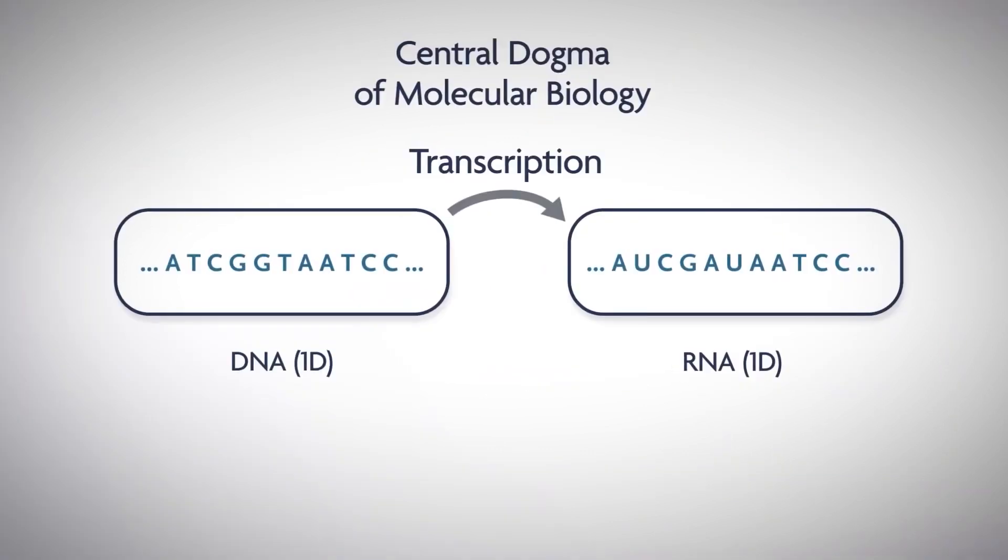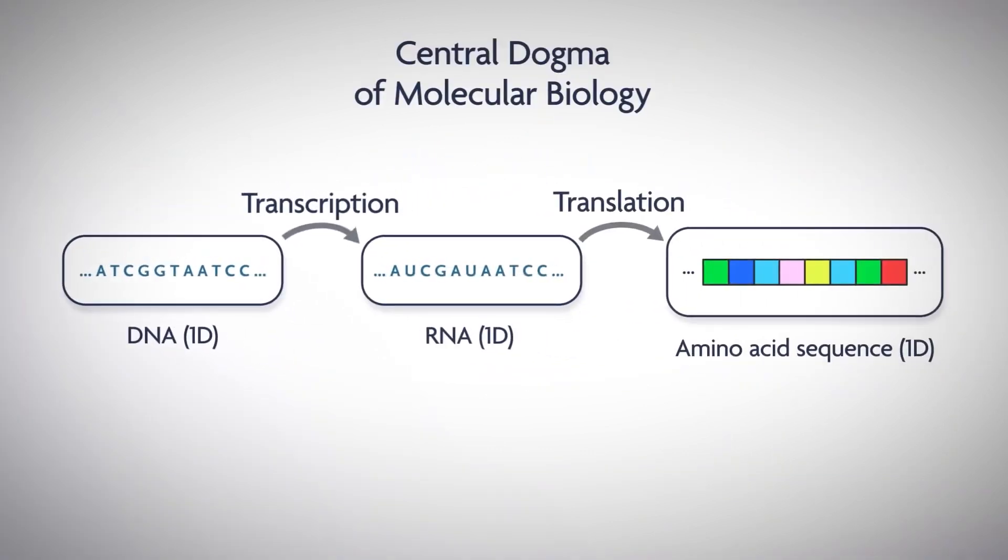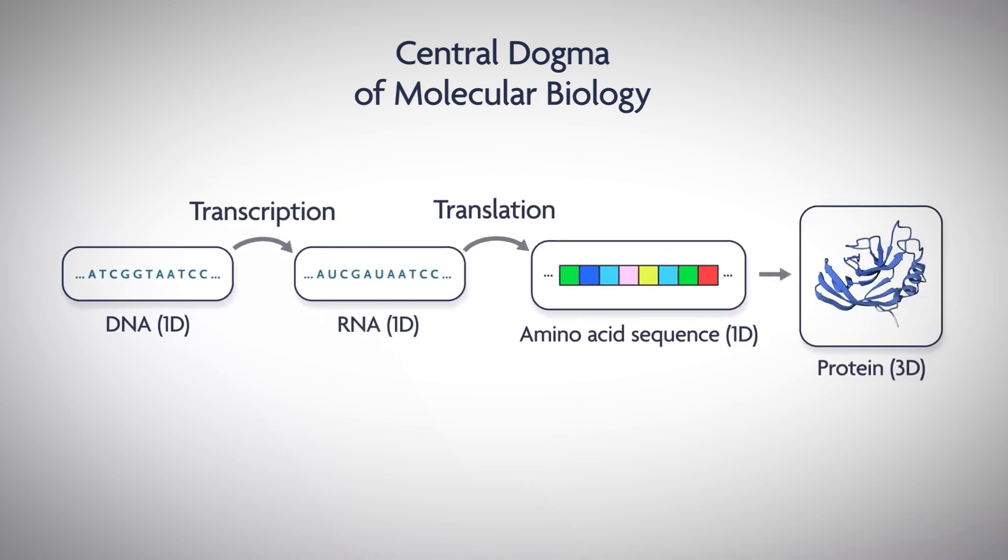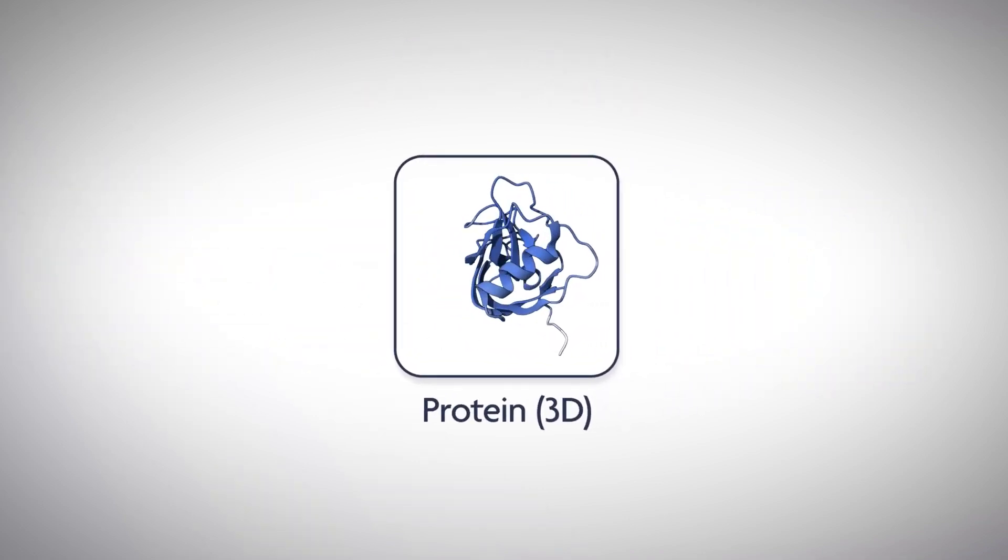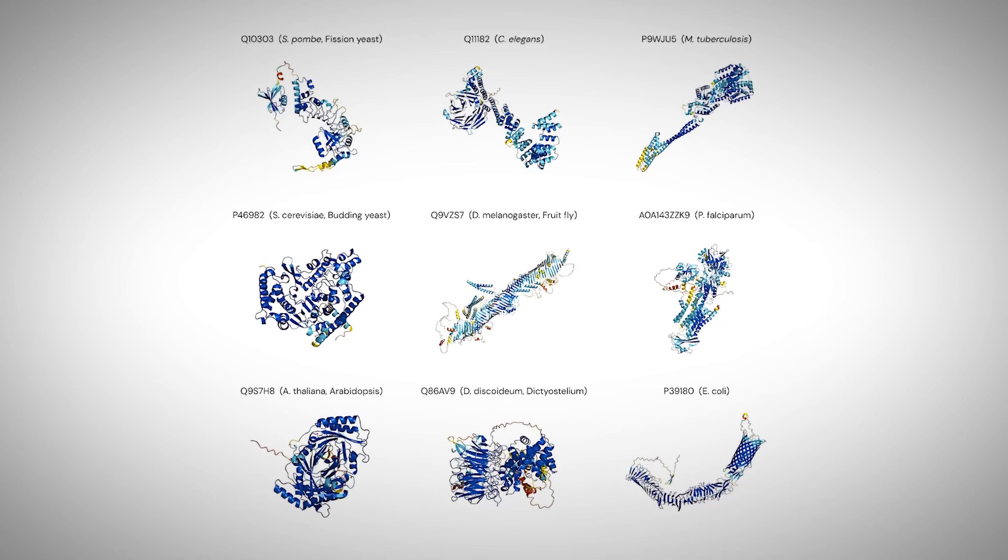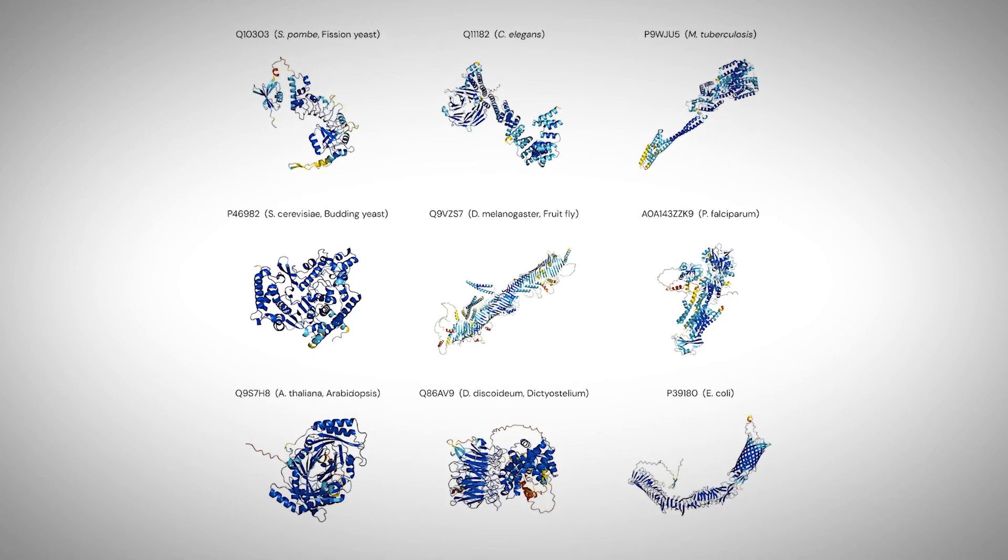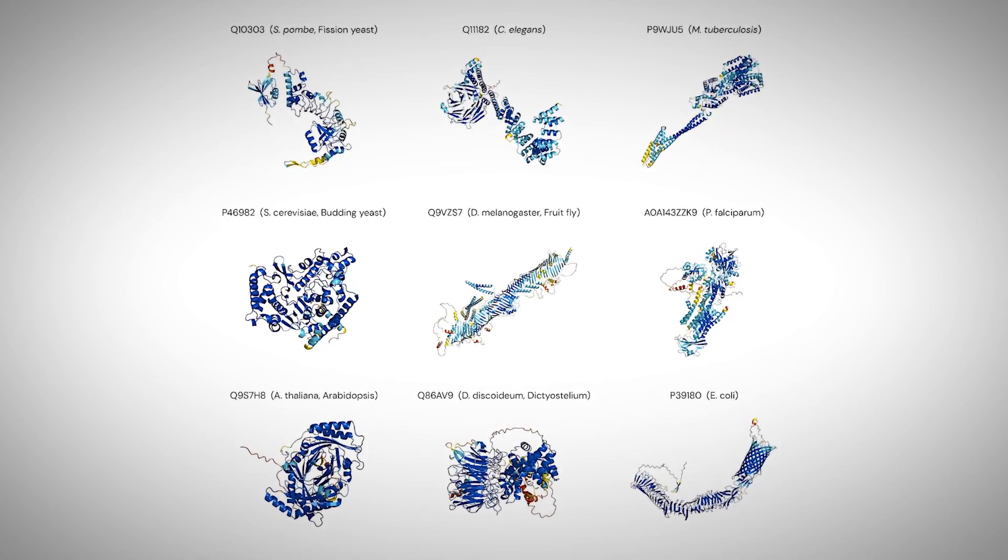After processing the input sequences of the molecules, it assembles its predictions using a diffusion network. The diffusion process starts with a cloud of atoms and gradually changes over many steps to the final and most accurate molecular structure prediction. This approach to modeling entire molecular complexes allows AlphaFold to unify scientific insights and surpass the accuracy of all existing systems in predicting molecular interactions.